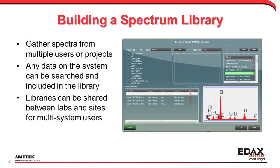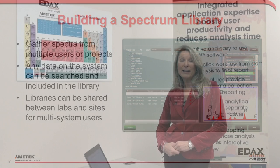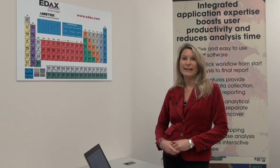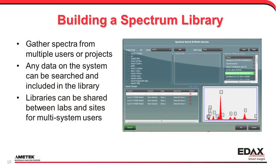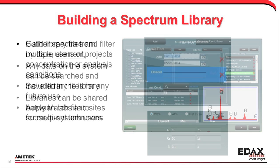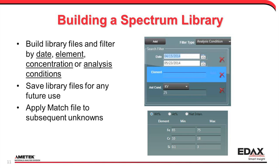The spectrum library program works in two parts. The first part is building a library of materials, and this is done on any EDX Team system. Even if you've had your system for many years, you could go back and search through the entire database of your spectra to create a library. You can also search by different parameters — for example, filtering by date, elemental concentration, or analysis conditions. That library can be saved.